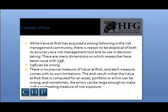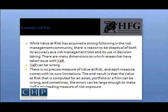For one thing, VAR can be slightly wrong. There is no precise measurement of Value at Risk, and each measure comes with its own limitations. The end result is that the value at risk computed for an asset, portfolio, or firm can be different. The errors can be large enough to make VAR a misleading measure of risk exposure. The reasons for the errors can vary across firms and for different measures include a number of reasons.